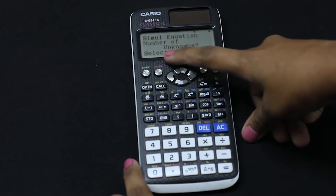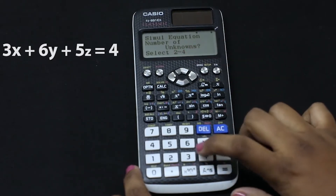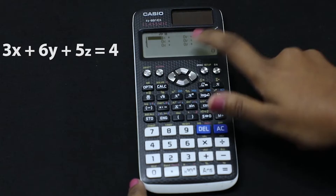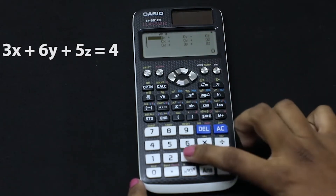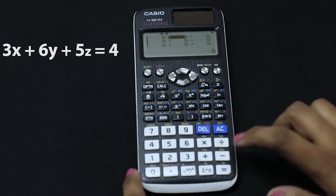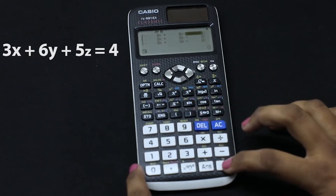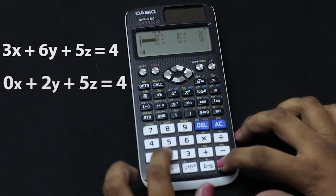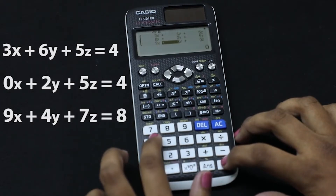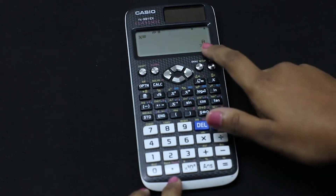Now it asks how many unknowns there are. Let's solve the simultaneous equation for 3 unknowns, so I will enter 3. Now let's enter the values in the cells. The first value I will enter as 3 — to put this value in the cell, we press equal to. Then let's load all the values and we get the answer.